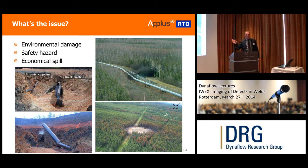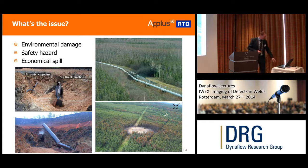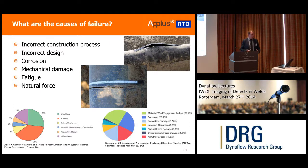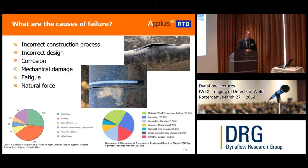In the United States, the Department of Transportation keeps close records of these failures and examines them. But also in Canada, you can find records — the National Energy Board of Canada has research whereby they analyze what was the actual cause of the failure. That's of course the first step: if an accident happens, you'd like to know why it happened.